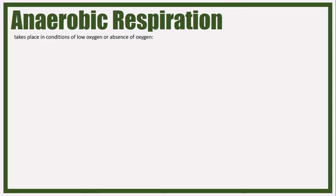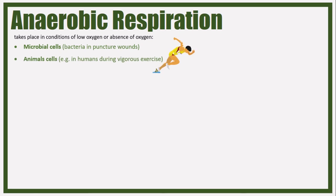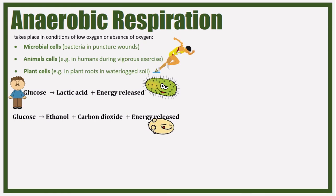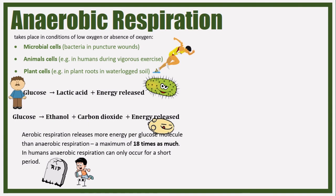Anaerobic respiration takes place when there is not enough oxygen. It takes place in microbial cells like bacteria in puncture wounds, in animal cells when humans do vigorous exercise - that's why you feel pain - and in plant cells in plant roots in waterlogged soil. The word equation for anaerobic respiration in humans and bacteria is: glucose gives lactic acid and energy is released.